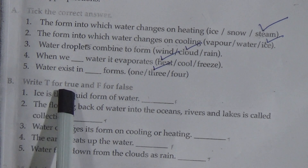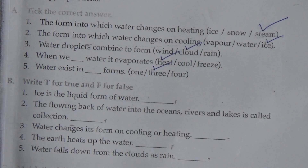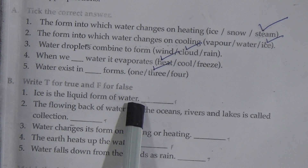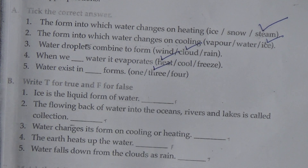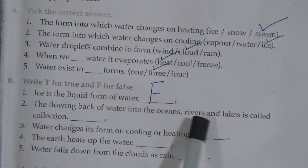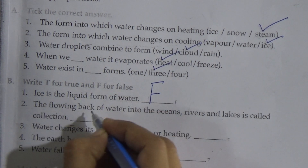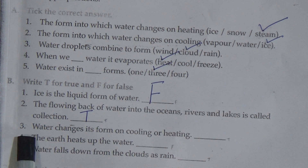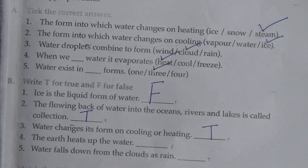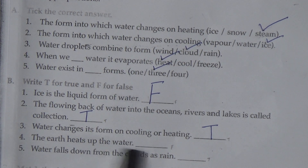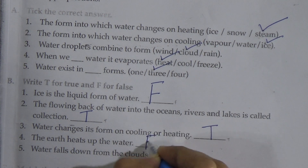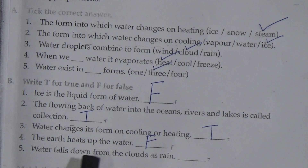Now B — write T for true and F for false. Number 1: ice is the liquid form of water. No — ice is the solid form of water. Answer is False — write F. Number 2: the flowing back of water into the oceans, rivers, and lakes is called collection. Answer: True — write T. Number 3: water changes its form on cooling or heating. Yes — answer True. Number 4: the ice heats up the water. False — ice cannot heat up the water. Number 5: water falls down from the clouds as rain. Answer: True — write T.